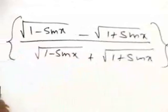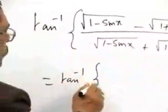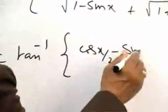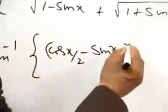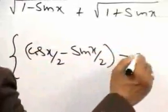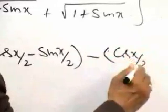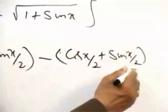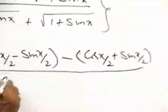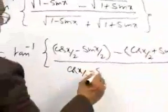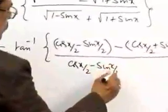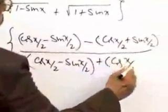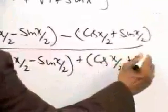Now this is the same as tan inverse of cos x by 2 minus sin x by 2 minus cos x by 2 plus sin x by 2, divided by cos x by 2 plus sin x by 2.